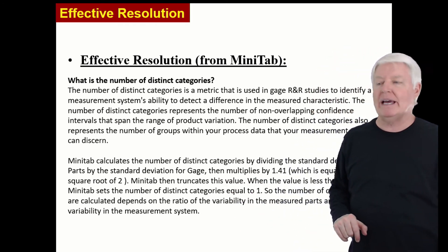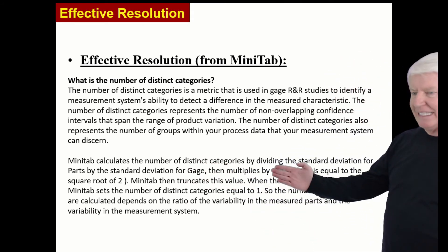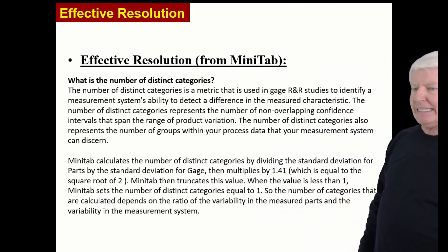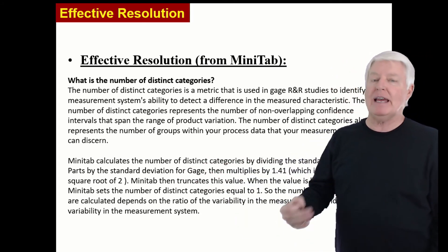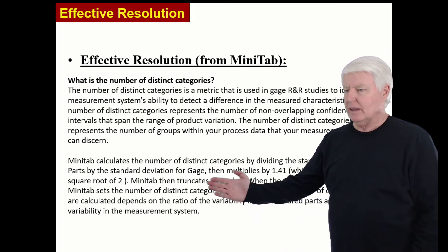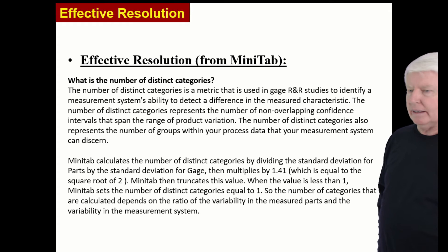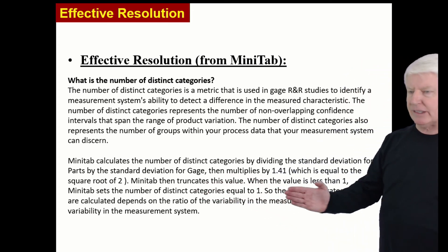But how does Minitab calculate it? Well, let's dig a little deeper into the woods here. Minitab calculates the number of distinct categories by dividing the standard deviation for the parts by the standard deviations of the gauge, or gauge R and R, or sigma of measurement, then multiplies that by 1.41, which is the square root of 2.